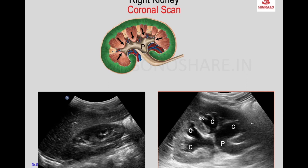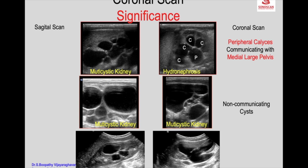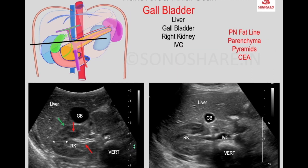So that is the calyces and renal pelvis. In another example, in the lower half of the kidney you see multiple cysts. But when you do a coronal scan, you see that the upper half of the kidney is normal, whereas in the lower half you see the peripherally dilated calyces communicating with the medially placed renal pelvis — the central echogenic area — extending continuous with the retroperitoneal echogenic area.